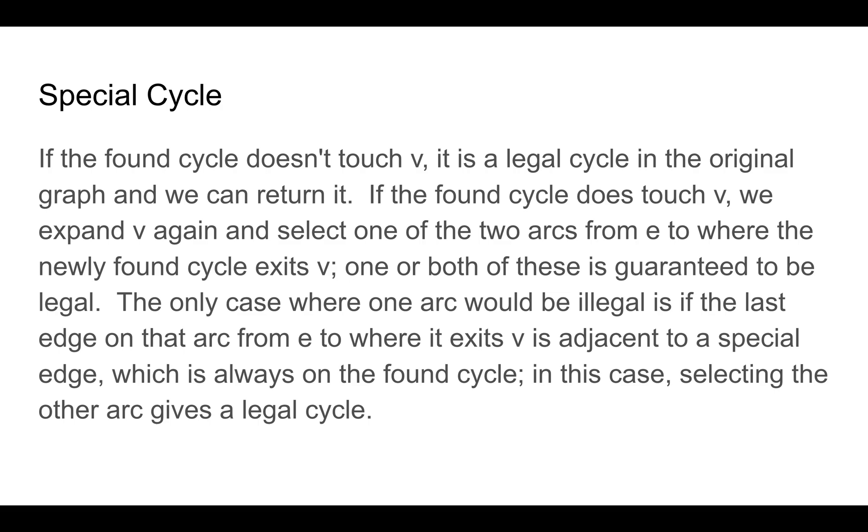One or both of these arcs in conjunction with the original cycle we found is guaranteed to be legal. The only case where one of those arcs would be illegal is if the last edge on that arc to where it exits v is adjacent to a special edge. This is always going to be on the found cycle. And in this case, selecting the other arc gives us a legal cycle, which we then can return.